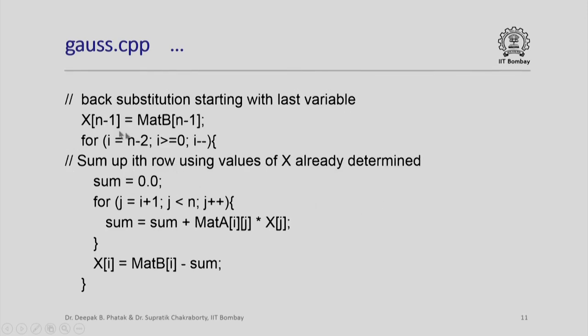Now, we back substitute starting with the last variable. So, we know that x[n minus 1] is simply the B[n minus 1] th element and once having got that for n minus 2 to 0, please note that we are going backwards n minus 1 th value we already got. Now, we got to get n minus 2, n minus 3, etcetera up to the 0 th value. So, this is for once we are using a for loop which moves from a higher value to a lower value going backwards all the way up to 0.